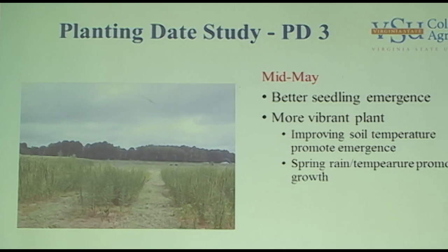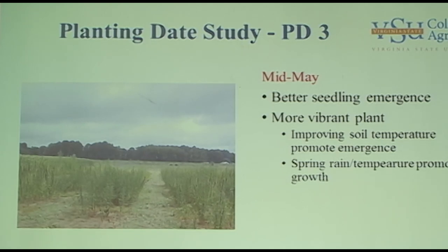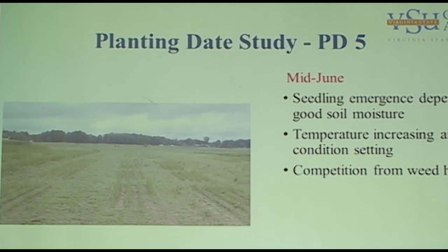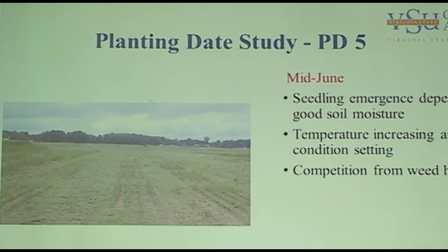Planting three was mid-May. Planting number four was around June, and we had some good growth, but what happened after that is that we went into a dry spell. Planting five was June 15th. These photographs were taken towards the end of June. So that's one of our studies.